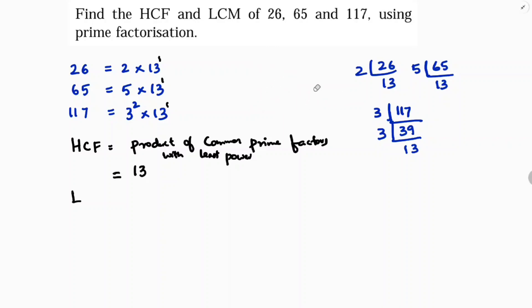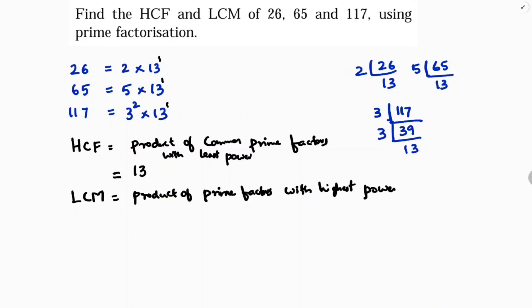Next, LCM is the product of all prime factors with the highest power. The prime factors across all three numbers are 2, 5, 3, and 13, giving us 2 × 5 × 3² × 13.